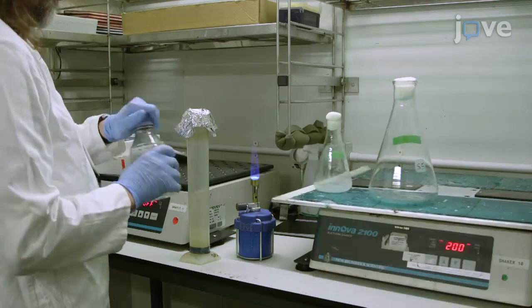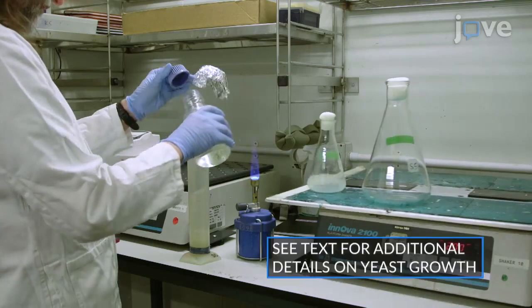In a fume hood, add methanol equivalent to 30 to 50 percent of the intended sample volume to a 50 milliliter tube.